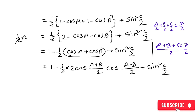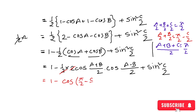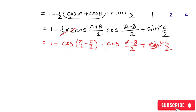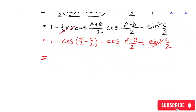Since all angles are in a triangle, all values are positive. We apply the substitution: (a/2) plus (b/2) plus (c/2) equals π/2. So (a+b)/2 equals π/2 minus c/2. This means cos((a+b)/2) equals sin(c/2). The expression becomes 1 minus 2 sin(c/2) cos((a-b)/2).